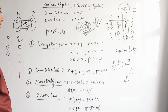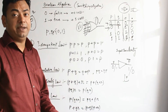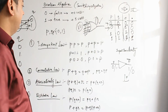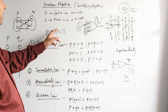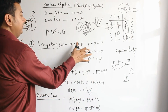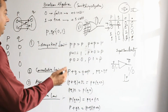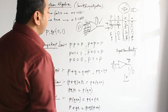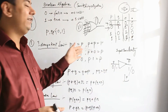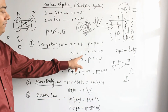Now let's move to the Idempotent Law. Idempotent law says: if you AND the same variable any number of times — P · P · P · P — the result will always be P. Similarly, if you OR the same variable N times — P + P + P — the result will be P. Also, P OR 1 (true) will always be 1, because the input sensitivity for OR gate is 1.